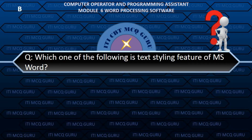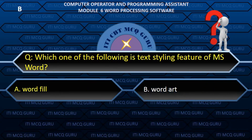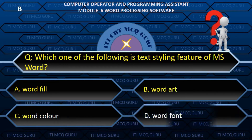Which one of the following is a text styling feature of MS Word? B. Word Art.